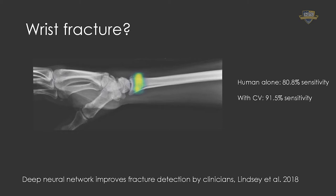The human by itself was only able to accurately identify a fracture with about 81% accuracy in a large dataset, whereas a computer with the help of highlighting where the fracture might be achieved over 90% sensitivity. So this is a big improvement. This is only one of many examples where computer vision and deep neural networks currently really excel.